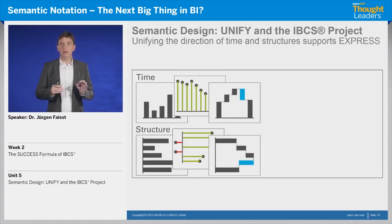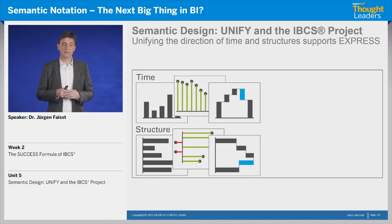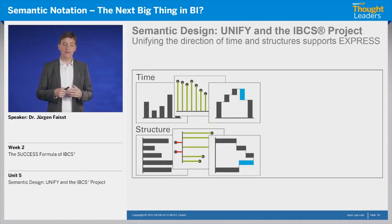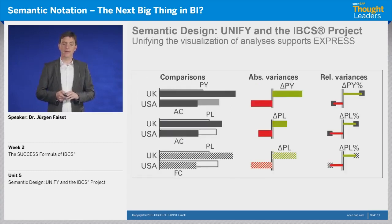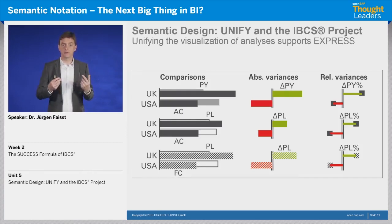If we have a consistent use of vertical and horizontal charts — we suggested using horizontal charts only for time series and vertical bar charts for the comparison of structures — this is of course a semantic rule, but it supports the choice of the right visualization, so it supports EXPRESS. The same applies to a unification of how we visualize variances, using red and green and so on — this helps find the right way for proper visualization.